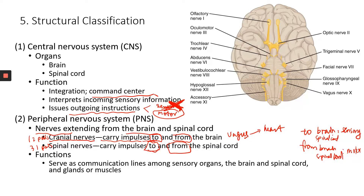The nerves serve as communication lines among sensory organs, the CNS, and the effector organs. The sensory organs could be your eyes, your ears, your tongue — which transmit chemical information about your food into your brain, and this is how you can taste things. Also skin — you have sensory structures in the skin that allow you to detect temperature change, pain, or simple touch.